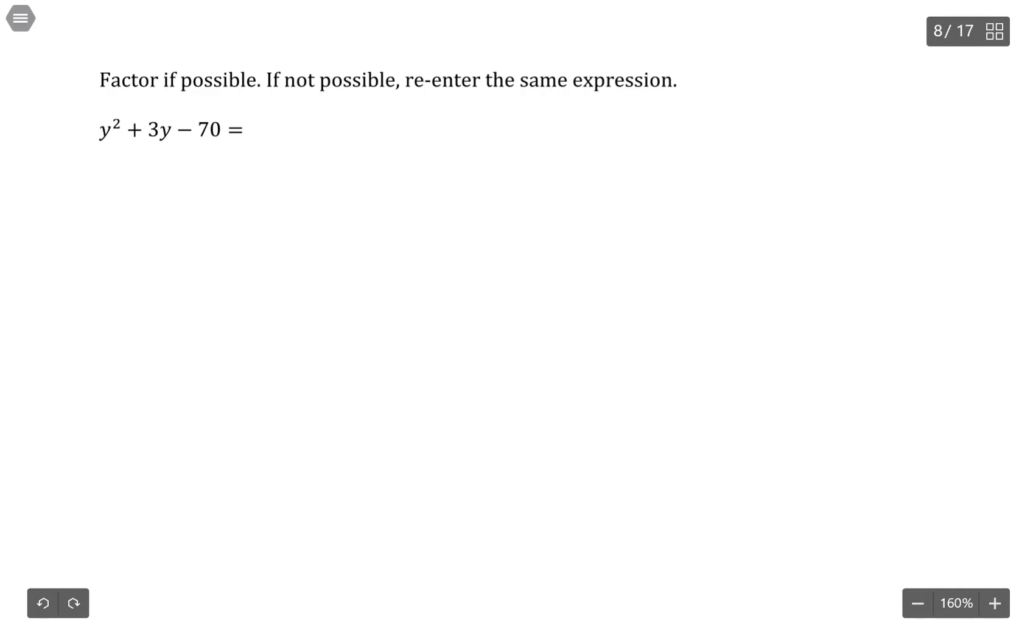So for this to factor, it's going to be the product of two linear factors where I have two values that are going to multiply to negative 70, but then add up to 3. So I need to think about the factors of 70.